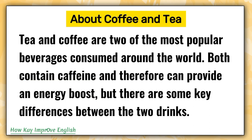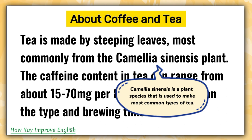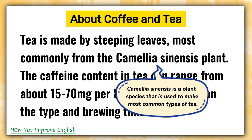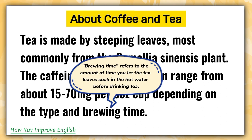Both contain caffeine and therefore can provide an energy boost, but there are some key differences between the two drinks. Tea is made by steeping leaves, most commonly from the Camellia sinensis plant. The caffeine content in tea can range from about 15 to 70 mg per 8 oz cup depending on the type and brewing time. Brewing time refers to the amount of time you let the tea leaves soak in the hot water before drinking tea.